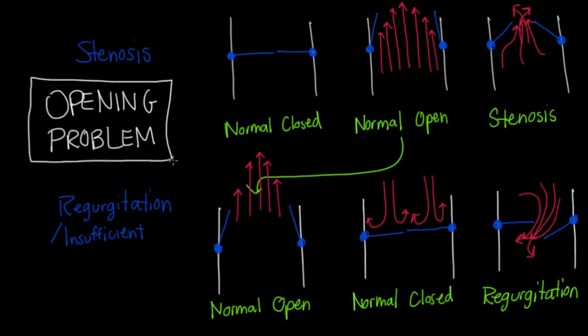Now regurgitation is kind of the opposite. And so this is a closing problem. Now the valve for whatever reason is regurgitant and can't close all the way. And so now this can cause back leak of blood. And again, this is a closing problem.